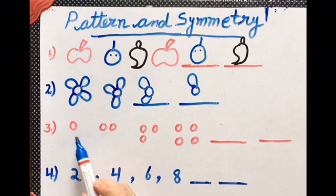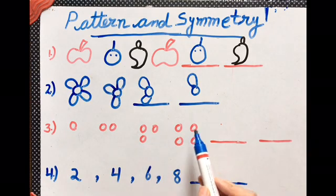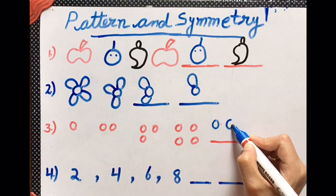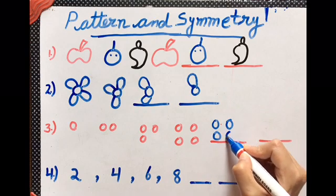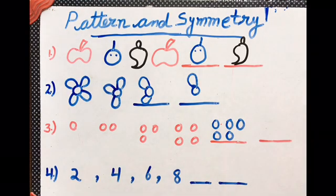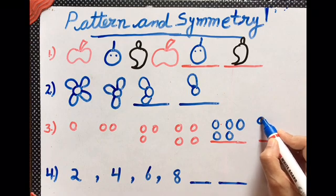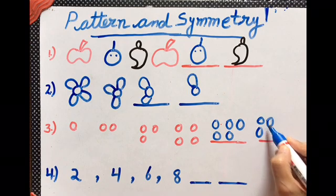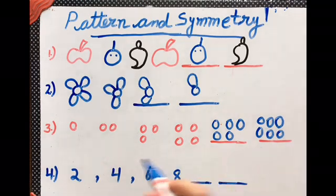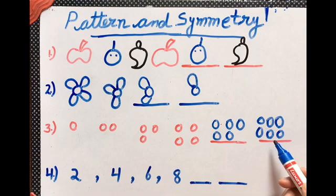And now another one: one circle, two circles, three circles, four circles. Now the next will be one, two, three, four, and five circles. And then one, two, three, four, five, and six circles.